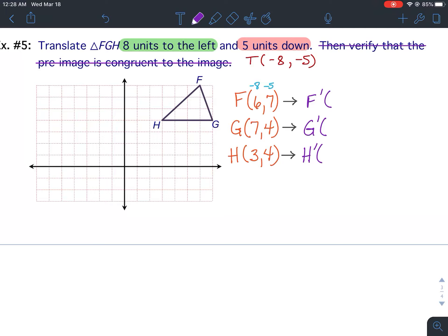So for F prime, six minus eight, or negative eight plus six, however you want to look at it. Six minus eight would be negative two. Seven minus five would be positive two.